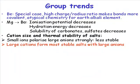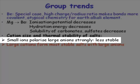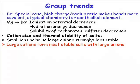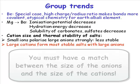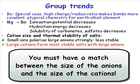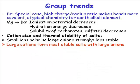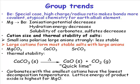Small ions like beryllium 2+ polarize large anions, and what you get then is a species that is not very stable. One of the general points when predicting the stability of an ionic lattice is that you need a match between the size of the anions and the size of the cations. The most stable lattices are those where the anions and cations are matched fairly closely in size.